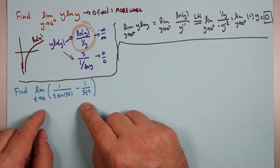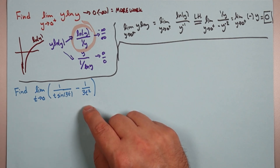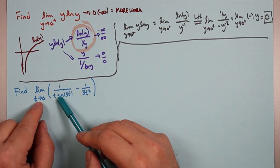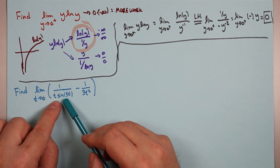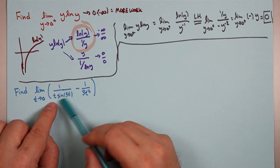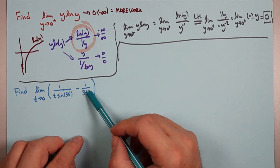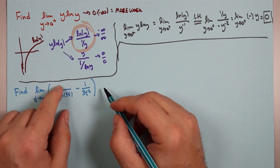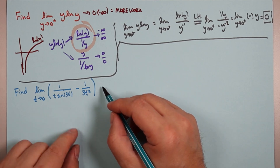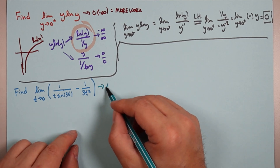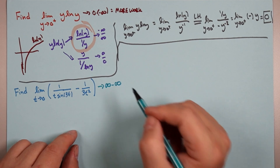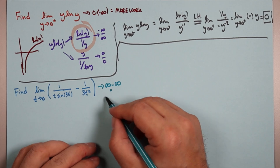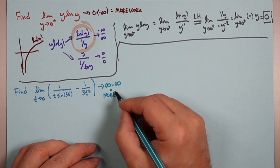Let's look at this one: find the limit as t goes to zero of 1/t² minus 1/(t·sin 3t). Plug in t=0: you get 1 over 0, and 1 over 0 — each is big — so it's infinity minus infinity. That means more work.